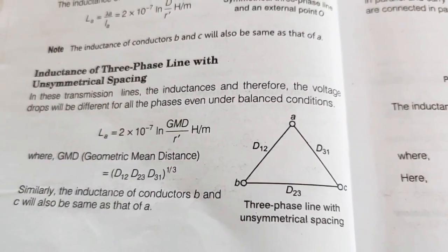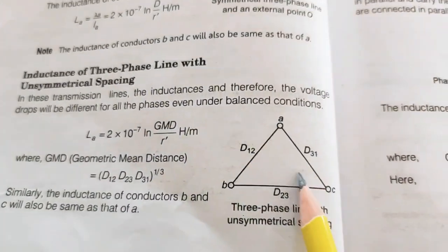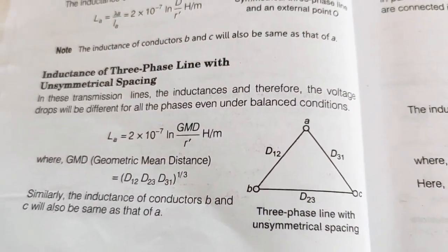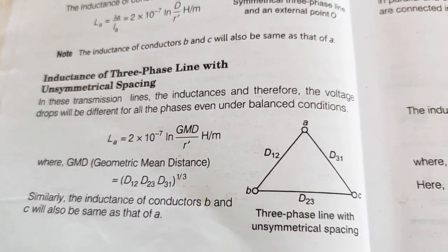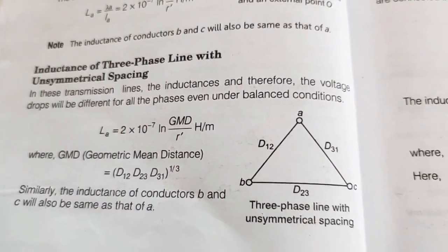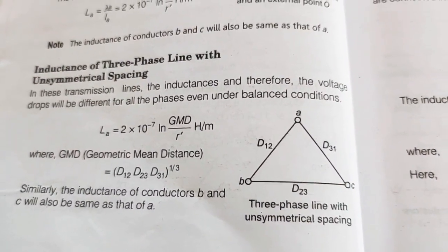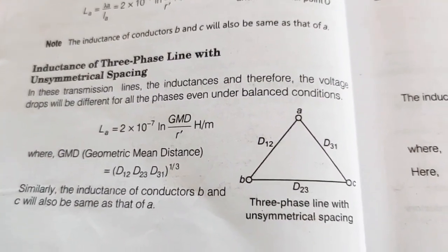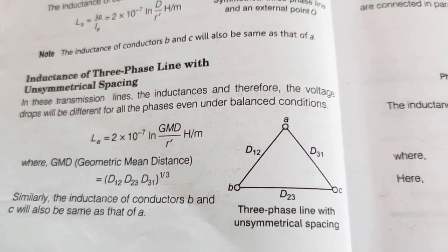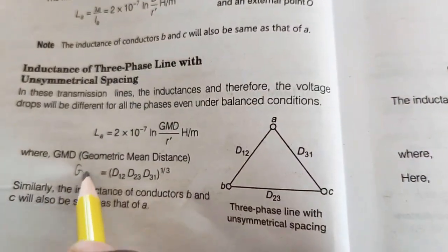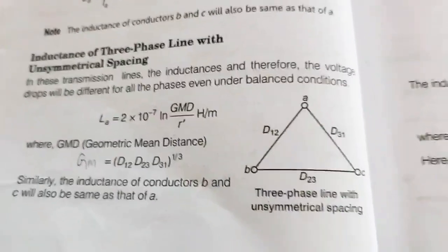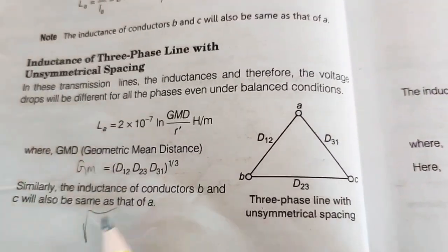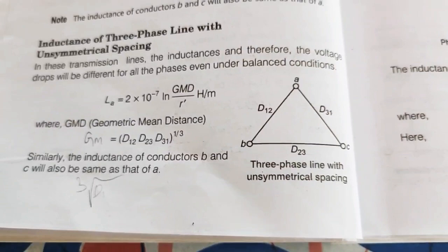For inductance of a three-phase line with unsymmetrical spacing, the inductance and voltage drop will be different for all phases even under balanced conditions. L-A equals 2 into 10 to the power minus 7 times ln(GMD/R-dash) Henries per meter, where GMD is the geometric mean distance. GMD equals the cube root of D12 · D23 · D31.